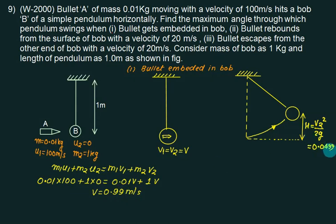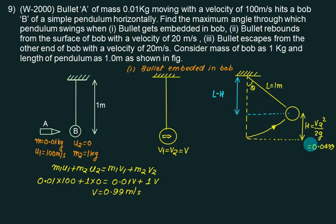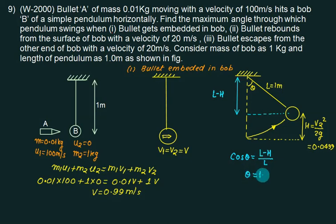We find h equals 0.0499 m. The angle theta with length l equal to 1 meter: the critical distance is l minus h, so cos(theta) equals (l minus h) divided by l. Substituting, we find theta equals 18.18 degrees for the first case.